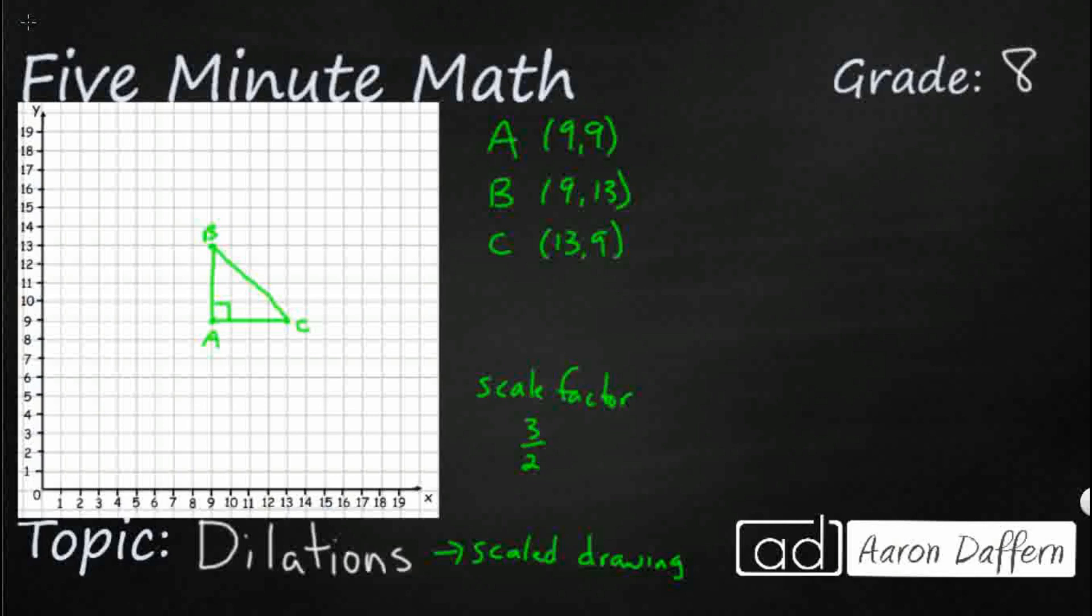Alright, so if we do 3 halves, that means we need to take every single one of these points and we need to multiply it by 3 halves. Now whether you want to multiply it by 3 halves, whether you want to multiply it by 1.5, it's your choice.